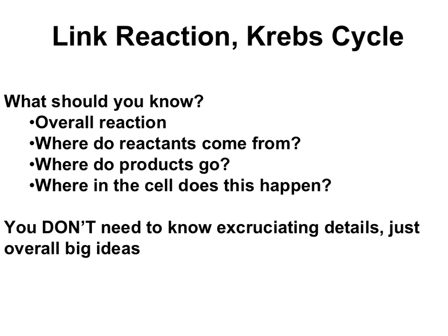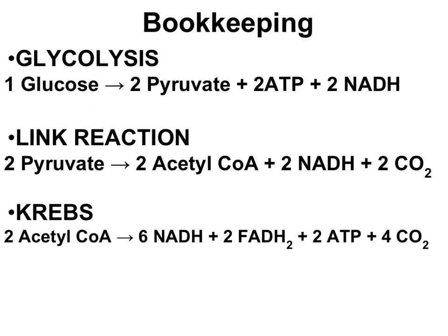Let's catch our breath with the really important things to remember: what are the overall reactions, where do the reactants come from, where do the products go, and where are these processes happening in the cell? For the link reaction, the pyruvate reactants came from glycolysis, the acetyl-CoA products go on to the Krebs cycle, the NADH products carry high-energy electrons to the electron transport chain, and the carbon dioxide waste diffuses out of the cell. In the Krebs cycle, two acetyl-CoA molecules react to give six NADHs, two FADH2s, two ATPs, and four carbon dioxides. The ATP is used for cell work, NADH and FADH2 go to the electron transport chain, and the four carbon dioxides are wastes that diffuse out of the cell.